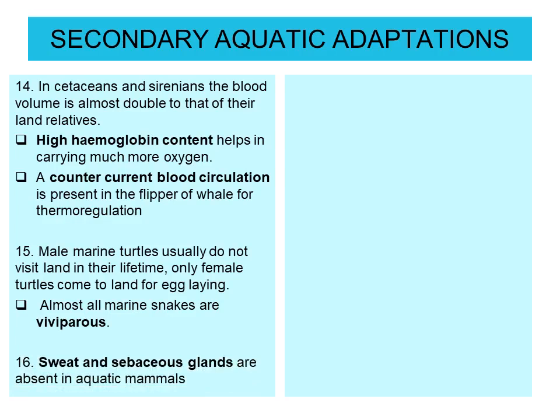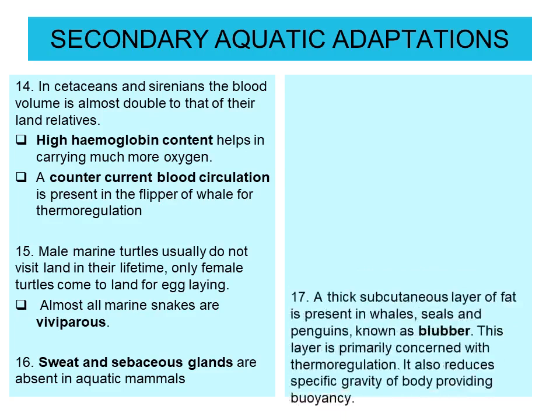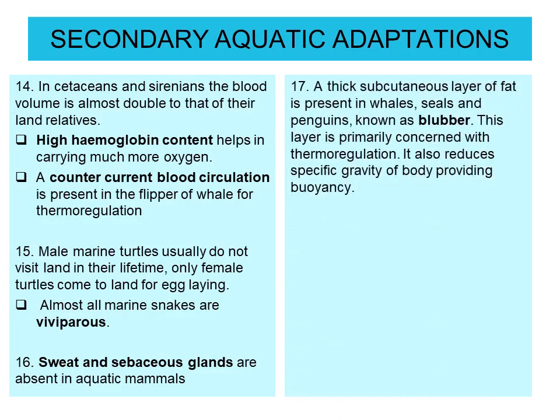Sweat and sebaceous glands are absent in aquatic mammals. A thick subcutaneous layer of fat, known as blubber, is present in whales, seals, and penguins. This layer is primarily concerned with thermoregulation and also reduces the specific gravity of the body, providing buoyancy.